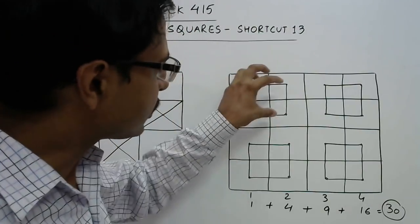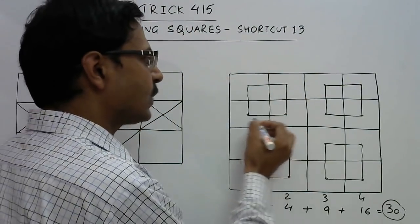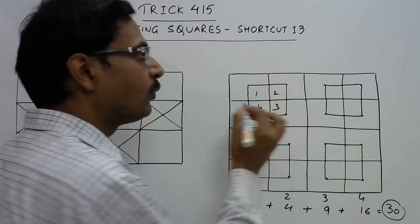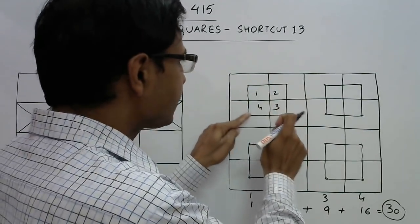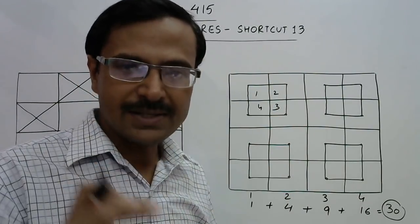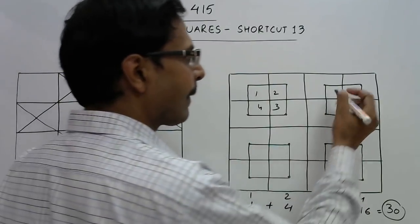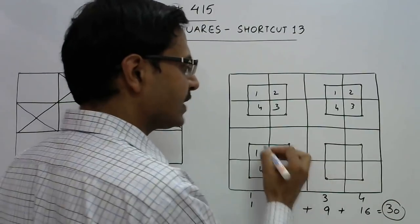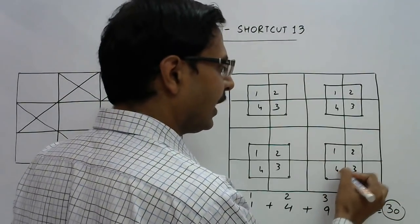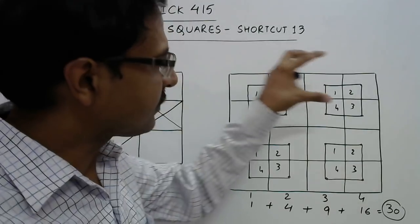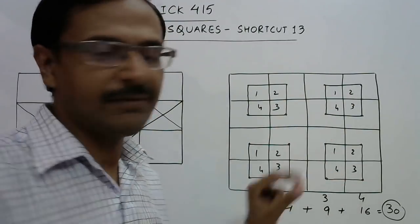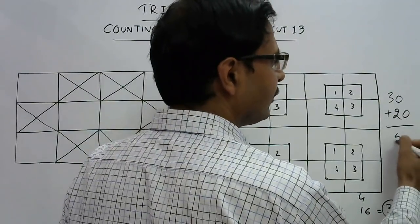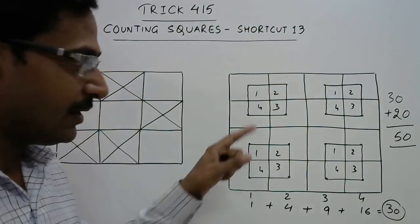Now we have to consider the small squares. If you see each small square, it is divided into 4 parts giving 5 squares each. There are four such small squares: 5 + 5 + 5 + 5 = 20 more squares. So we have 30 plus 20, which gives a total of 50 squares in this figure.